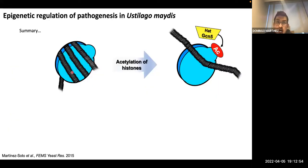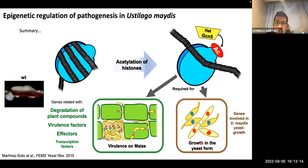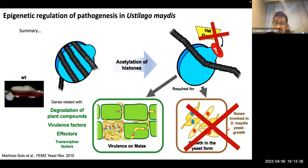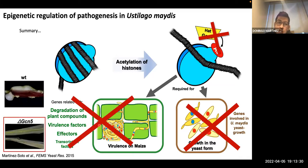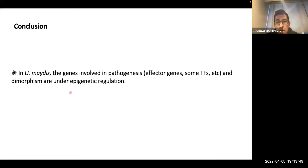In summary: if GCN5, which is a histone acetyltransferase, induces acetylation of the histones, this acetylation induces relaxation of the nucleosome, enabling the expression of genes involved in yeast growth but also genes involved in pathogenesis. In conclusion, in Ustilago maydis the genes involved in pathogenesis — effector genes, transcription factors, genes involved in plant compound degradation, and genes involved in dimorphism — are all under epigenetic regulation.